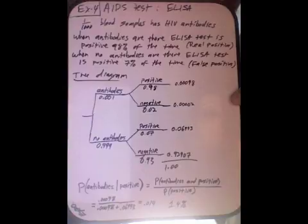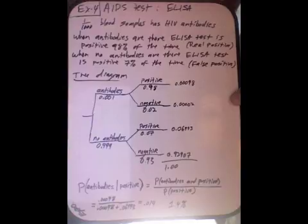To find the likelihood of each of those, we multiply our way down the tree branches. For example, the chance that there are antibodies and a negative result is .001 times .02, which gives us .00002 — very unlikely, which is good. We don't want an HIV positive person to test negative, because then they won't know. Another example: the chances that the person has no antibodies and comes up negative is .92907, the product of .999 and .93. It's good that that's a big number, because if people don't have HIV, we don't want them to think they do.